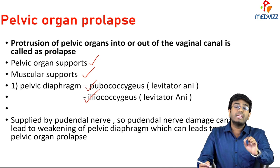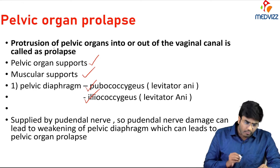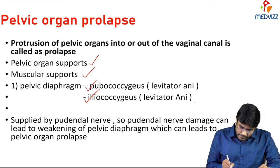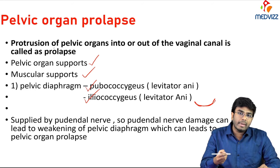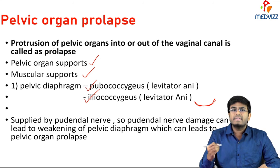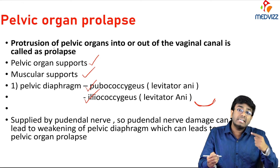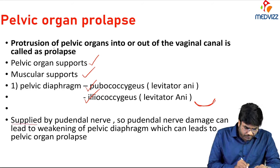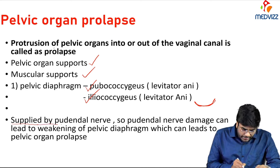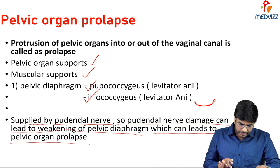One important cause of loss of tonicity of the pelvic diaphragm is nerve damage. The levator ani muscles are innervated by the pudendal nerve. Any damage to the pudendal nerve leads to decreased tonicity of the pelvic diaphragm, which in turn leads to weakening of the pelvic diaphragm and pelvic organ prolapse.